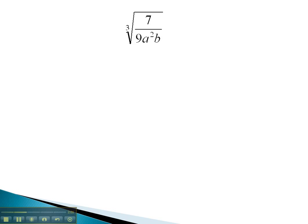Let's rewrite this problem as two separate radicals. As we do, we're going to factor the 9, so we know what factors we're dealing with. 9 is 3 squared, a squared b.